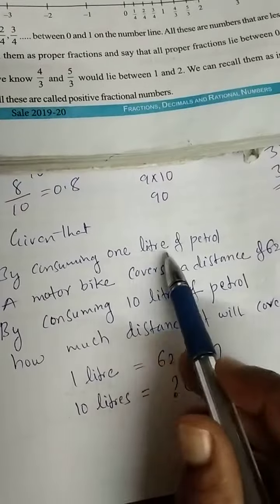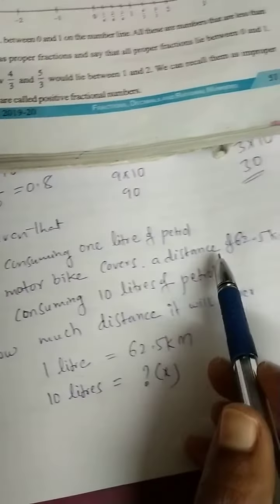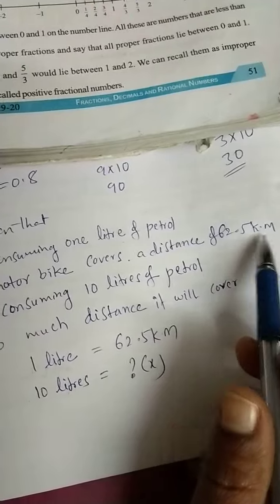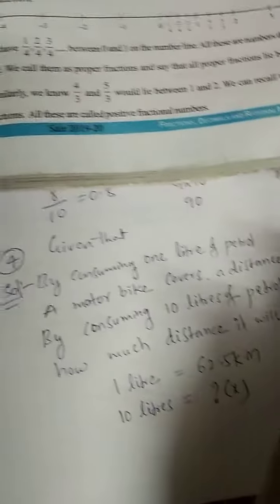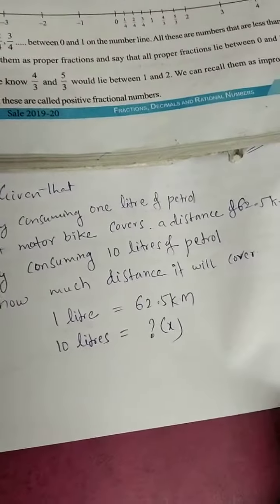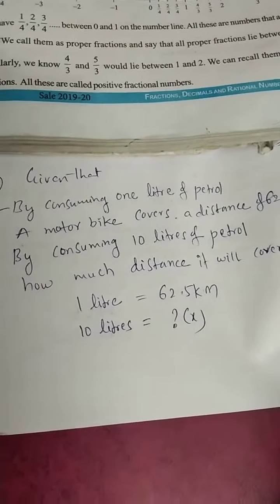By consuming 1 litre of petrol, a motorbike covers a distance of 62.5 km. By consuming 10 litres of petrol, how much distance it will cover? This is the given information in the question.